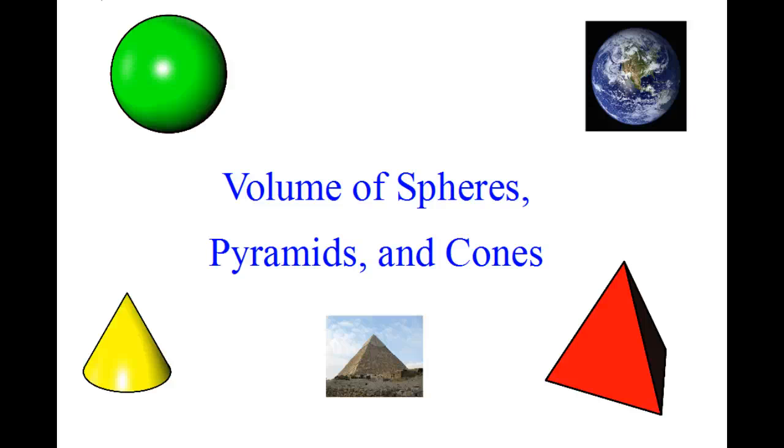We've talked about volume of rectangular prisms, triangular prisms, prisms of all kinds of shapes. In fact, we've talked about circular prisms - cylinders. So let's move on. Let's talk about more interesting shapes. We've got volume of spheres, pyramids, and cones.